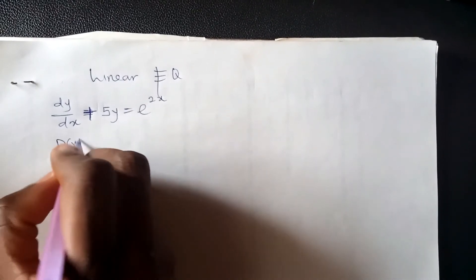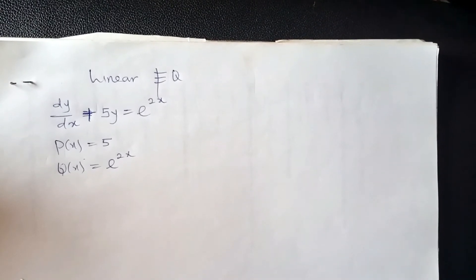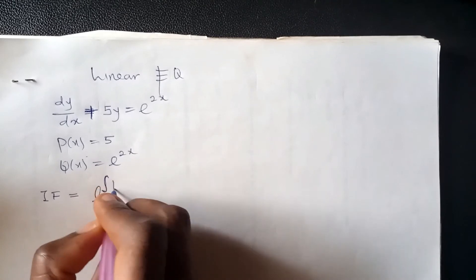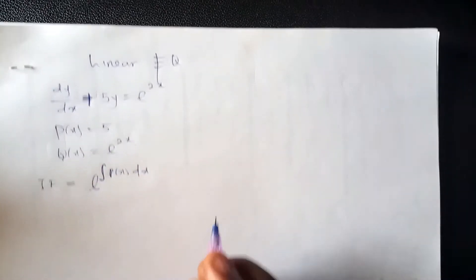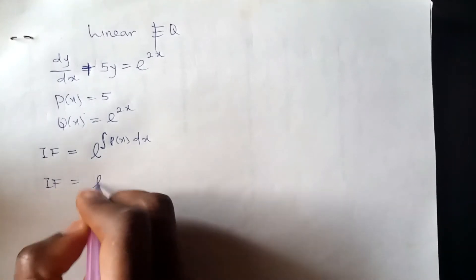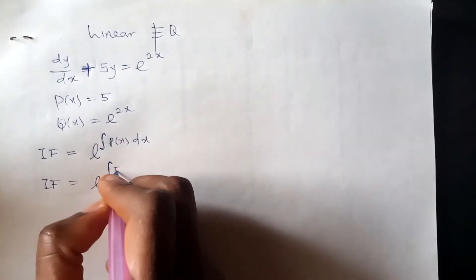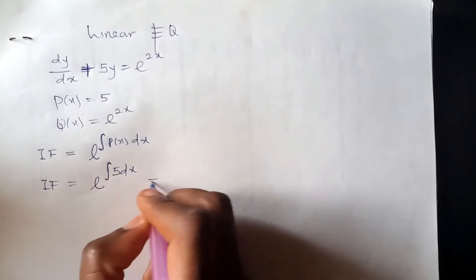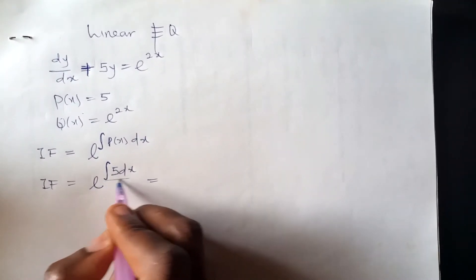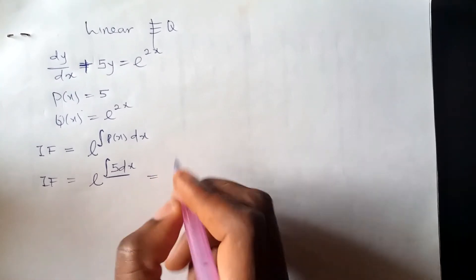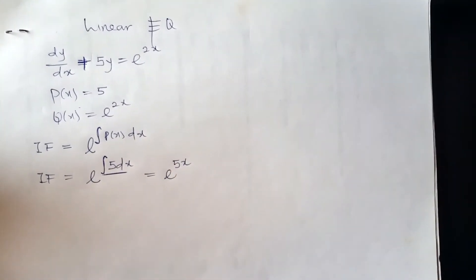Let's solve example one. This is a typical linear equation where p(x) = 5 and k(x) = e^x. The first thing we need is the integrating factor. The integrating factor is e raised to the integral of p(x) dx. So I compute e^(integral of 5 dx) = e^(5x). The integrating factor is e^(5x).